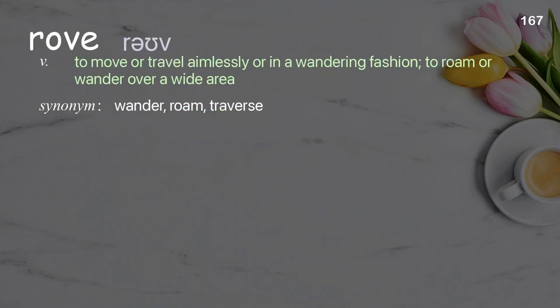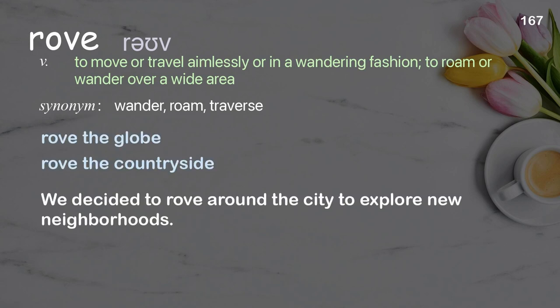Rove: to move or travel aimlessly or in a wandering fashion; to roam or wander over a wide area. Examples: rove the globe, rove the countryside. We decided to rove around the city to explore new neighborhoods.